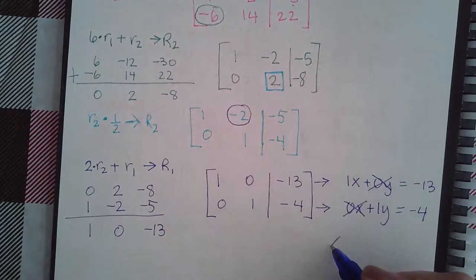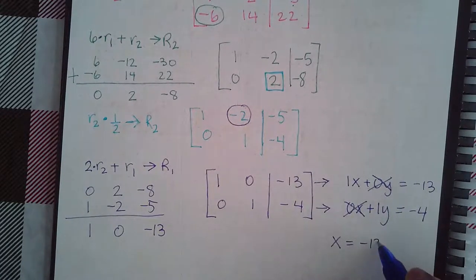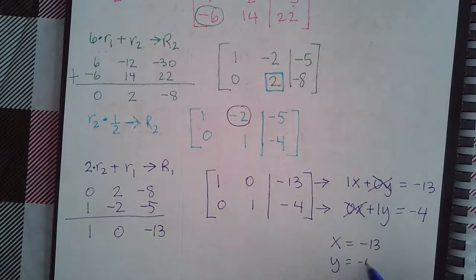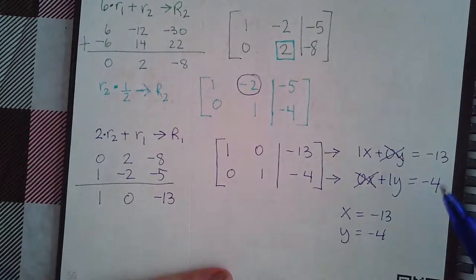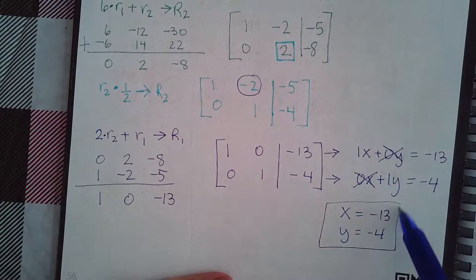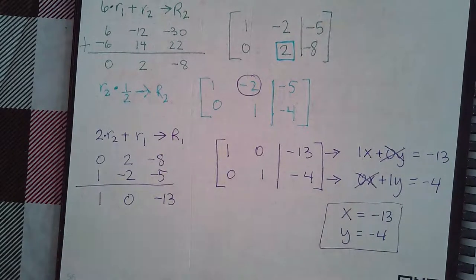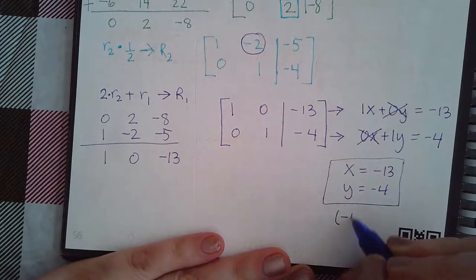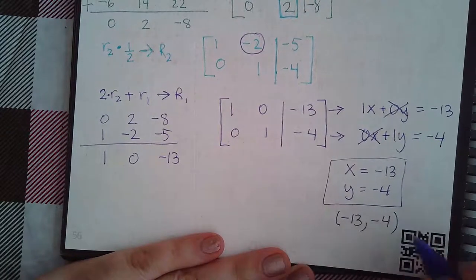And instead of writing 1x, we just write x. And instead of writing positive 1y, we just write y. And so, if they ask you for the answer like this, you could just type in the numbers where the x is and where the y is. Respectively. But if they ask you for the answer in point form, then you must put in the x-coordinate first and then the y-coordinate.